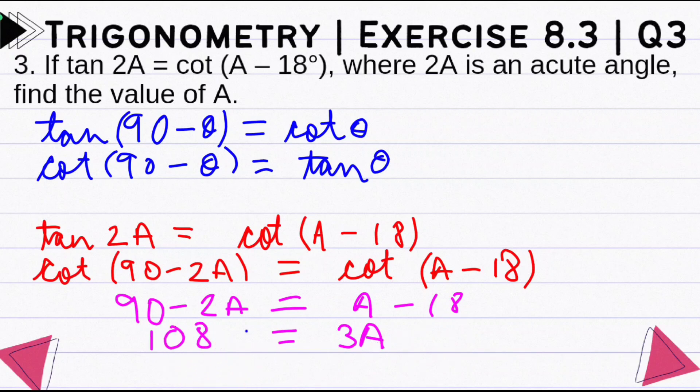So what will be the value of A? A equals 108° divided by 3, and this equals 36°. So the value of A is 36°.